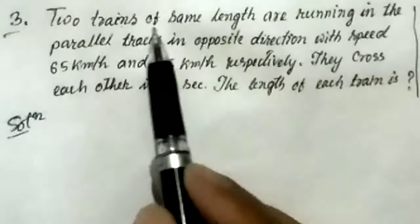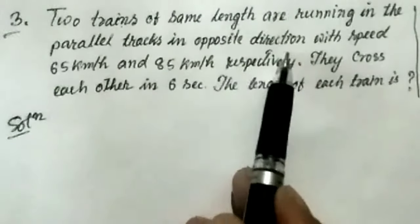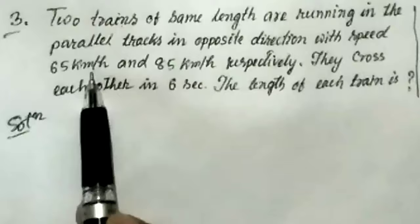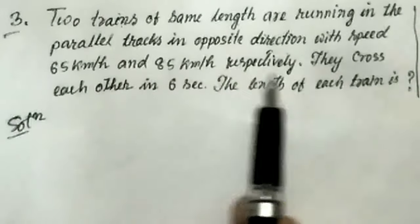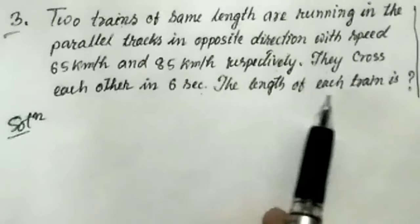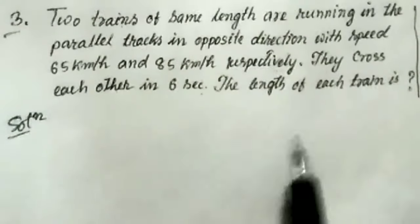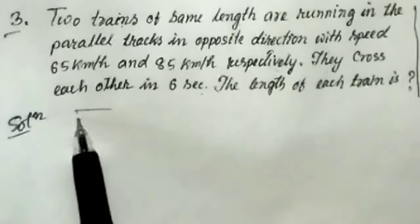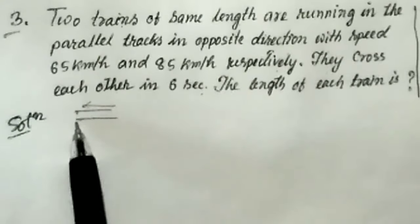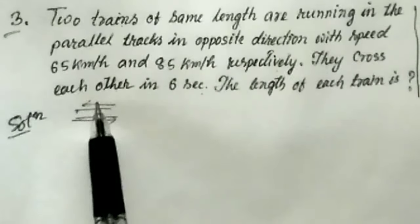Two trains of same length are running in the parallel tracks in opposite direction with speed 65 km per hour and 85 km per hour respectively. They cross each other in 6 seconds. The length of each train is?